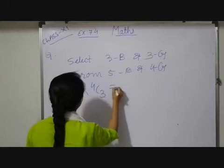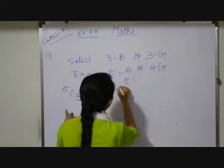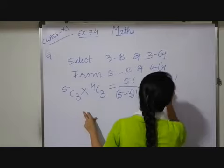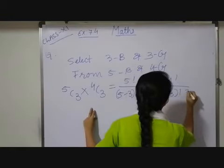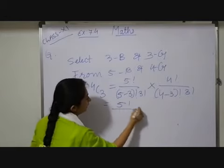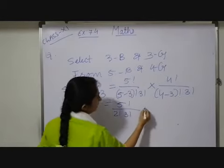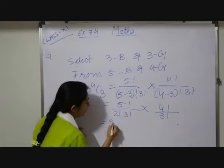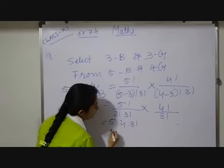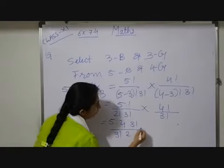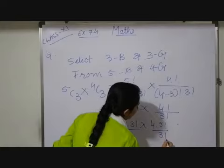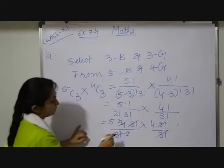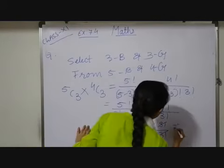From 4 girls I have to choose 3 girls to make the team, giving 4C3. Applying the combination formula: 5! / (2! × 3!) multiplied by 4! / (1! × 3!). Opening it: (5 × 4 × 3!) / (3! × 2) × (4 × 3!) / 3!. The 3! terms cancel, giving (5 × 4)/2 × 4 = 10 × 4 = 40 ways.